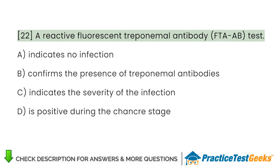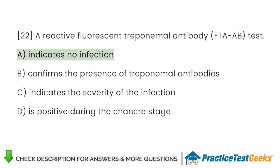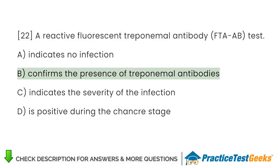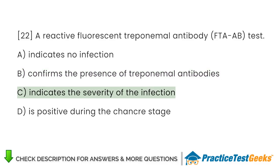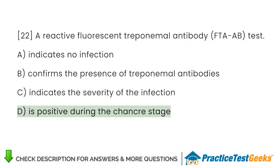A reactive fluorescent treponemal antibody (FTA-ABS) test: A. Indicates no infection. B. Confirms the presence of treponemal antibodies. C. Indicates the severity of the infection. D. Is positive during the chancre stage.